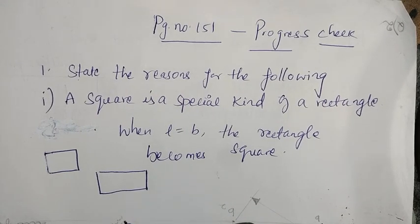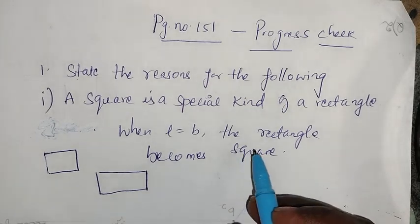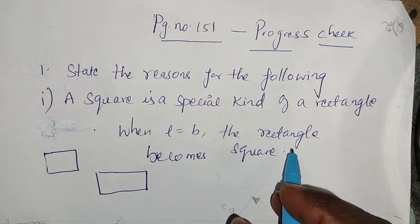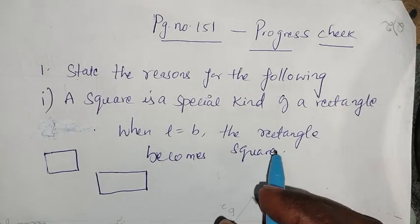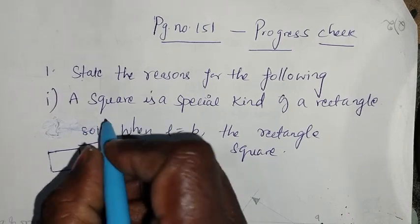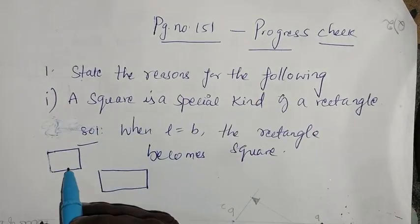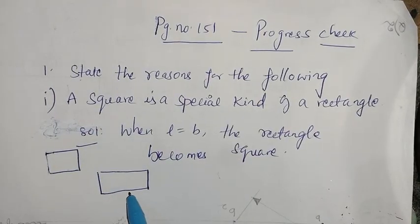State the reasons for the following. A square is a special kind of rectangle. Answer and solution: A square is a special kind of rectangle.